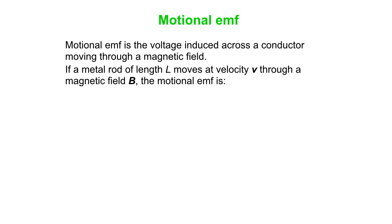Now, if we have a metal rod, it has a length L and moves at velocity V through a magnetic field B, the Motional EMF is given by minus VLB. That equation is true as long as those three things, velocity, field, and length, are mutually perpendicular.